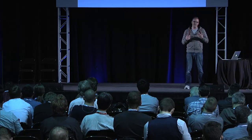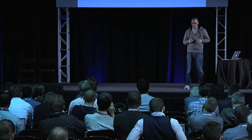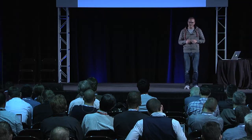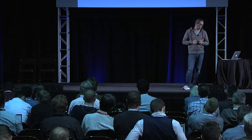The HA tool currently has an option to replicate DHCP to all agents. If you just want to spin up a lot of DHCP agents without going through each one manually, you can run the tool with the replicate DHCP option. It also has a dry-run option and other utilities to show you what it's going to do. That's the end of what we did with the HA tool — one implementation as an alternative to Pacemaker.